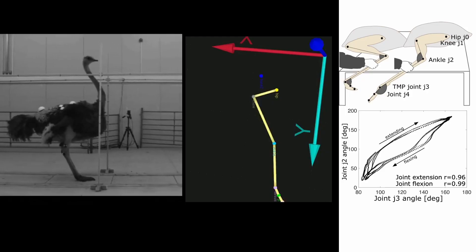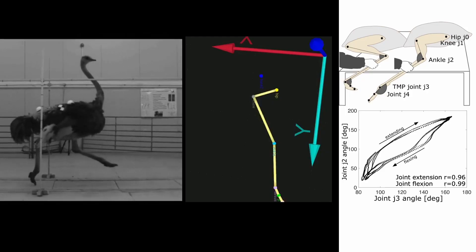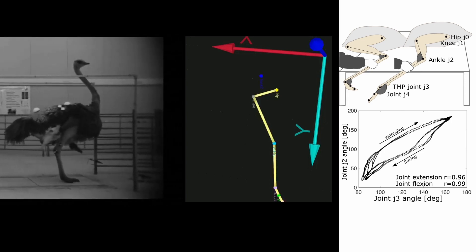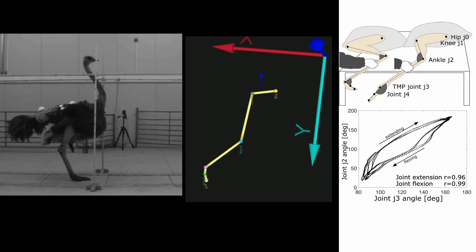Birds move their leg joints unlike humans. Their toe digits are flexed backwards during leg swing. We observed that the ankle and the tarsometatarsophalangeal joint are mechanically coupled.